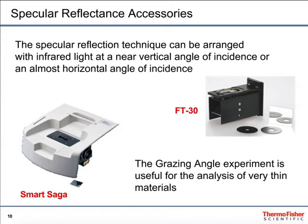Accessories used to do specular reflectance consist of a small number of mirrors that direct the beam onto the surface, then collect the reflected light and direct it through to the optics. Some, such as the Smart SAGA shown here, also involve the use of a polarizer. The beam can approach at a very grazing angle — very steep along the sample — or it could be at a more perpendicular angle. Which you'd want to use really depends upon the thickness of the films you're going to be looking at.